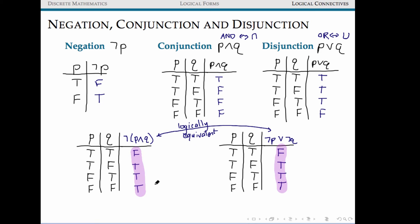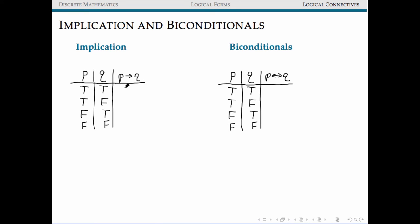We denote logical equivalence with a double-barred arrow — the double bar means the truth values of the two forms are exactly the same. So logical equivalence is going to be one of our big goals over the next week. There is also a new type of logical connective we haven't considered yet: implication. Implication is essentially built around the idea that if p is true, then q is also true — if the first holds, then the second must hold.